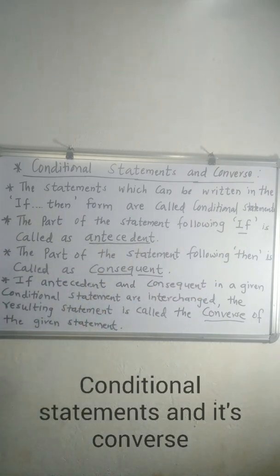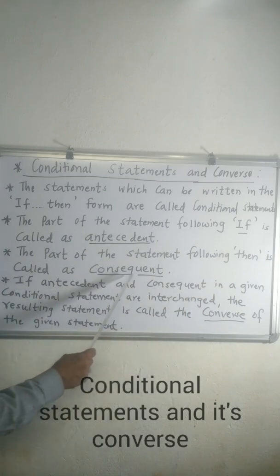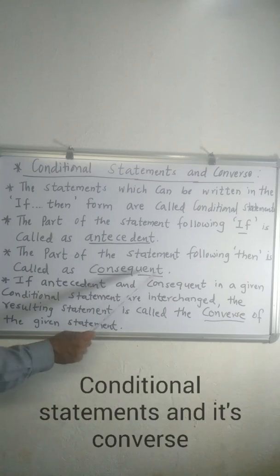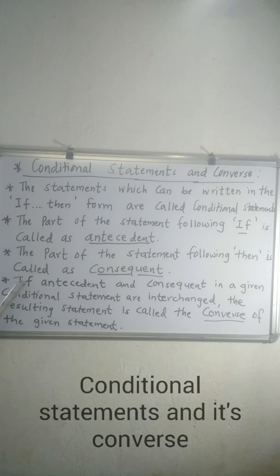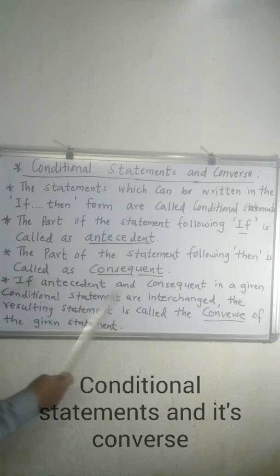The antecedent is the first part, and the second part of the statement — the part following 'then' — is called the consequent. There are two parts in an if-then statement: first is the antecedent and second is the consequent. If the antecedent and consequent in a conditional statement are interchanged, the resulting statement is called the converse.